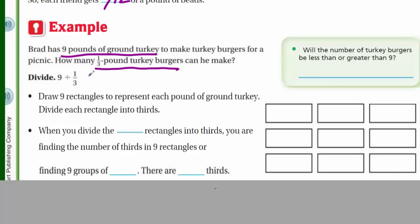Think about that. We have nine pounds of ground turkey. The turkey burgers are less than one pound, so it's less than one whole. So will the number of turkey burgers be less than or greater than nine? Well, you probably would know right away that it would have to be greater than because you're taking an amount smaller than your whole number. You're taking one-third. Nine divided by one-third then. Draw nine rectangles to represent each pound of turkey. Divide each rectangle into thirds.